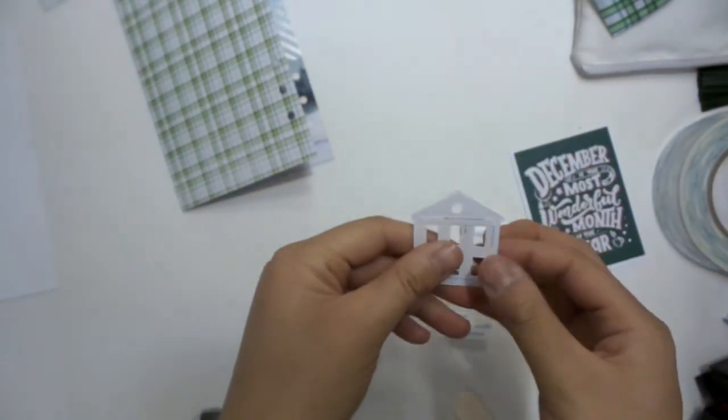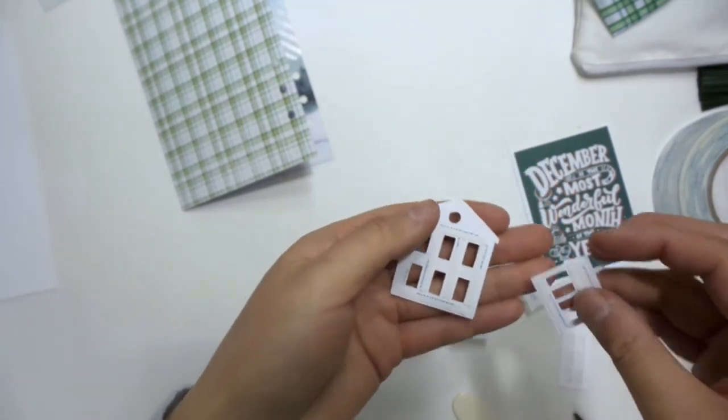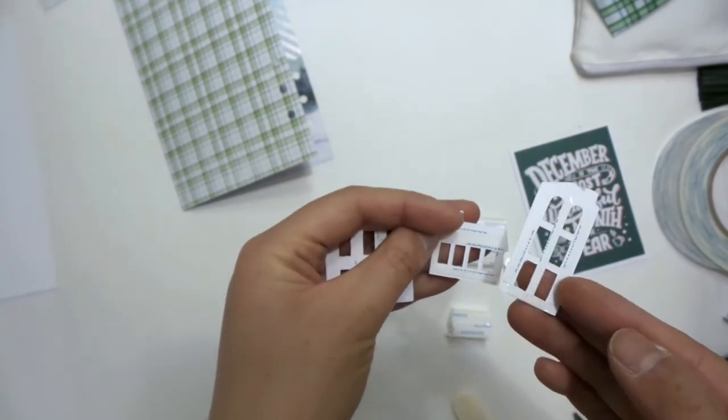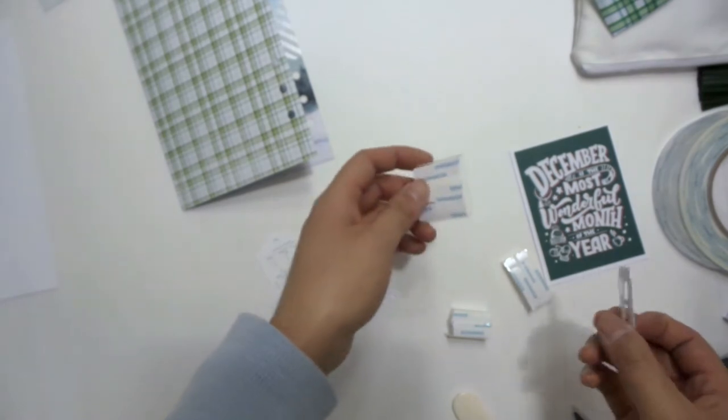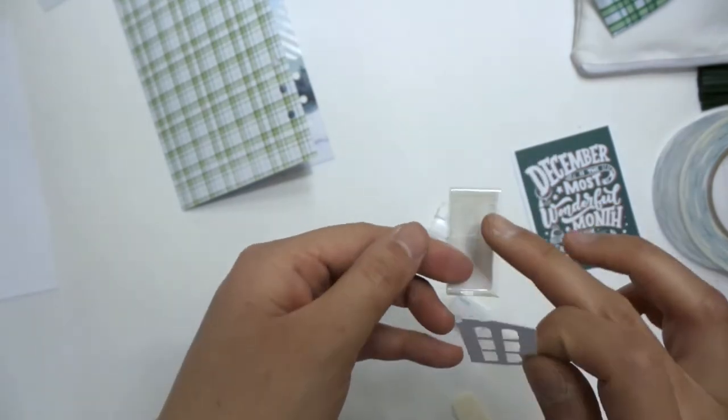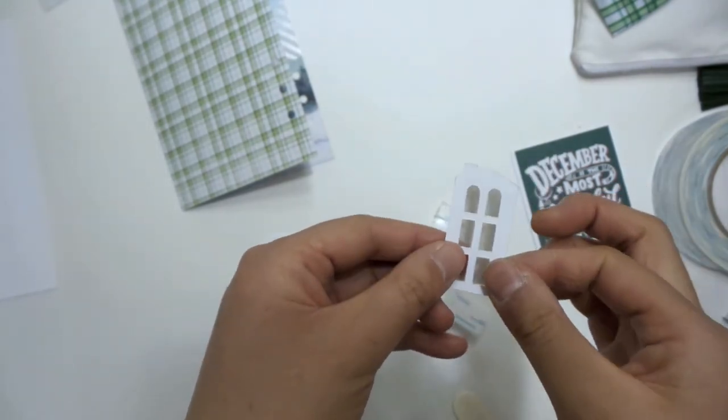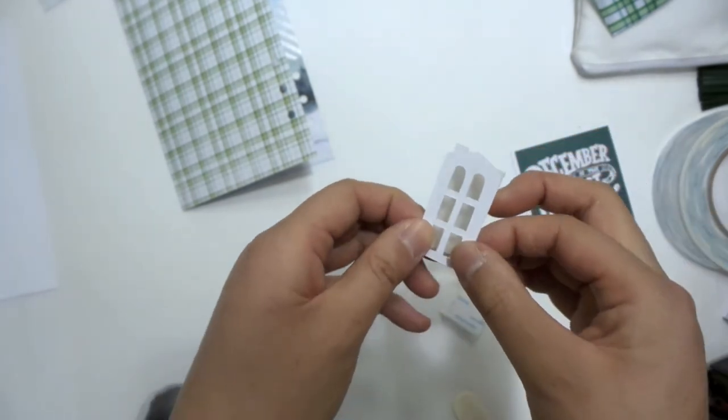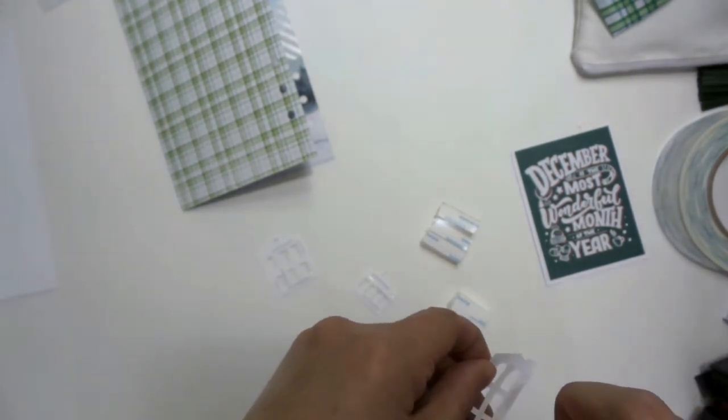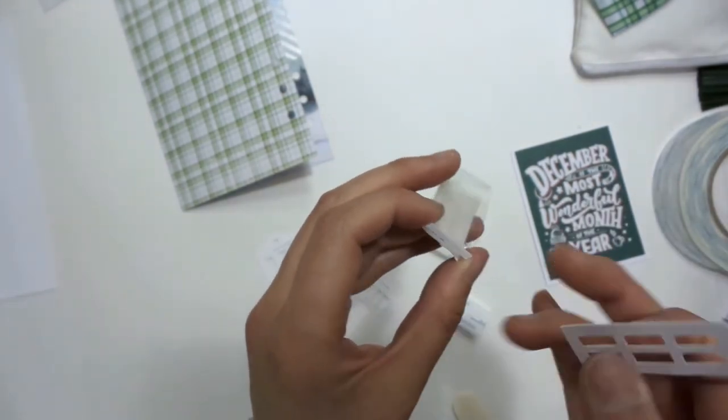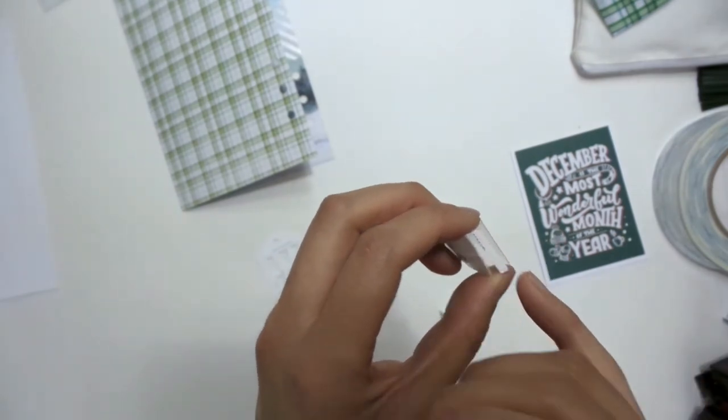All right, so I have applied my eighth inch score tape around some of the edges of these windows and I'm going to be applying these house shapes to the acetate pieces so that they go on the clear side and the bottom of the rectangle lines up with the bottom of the house like so. And you want to make sure that the bottom of the rectangle is the one that has the score tape on it.